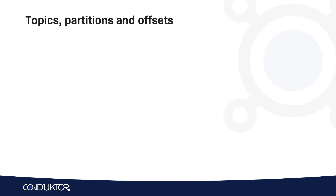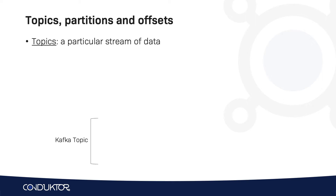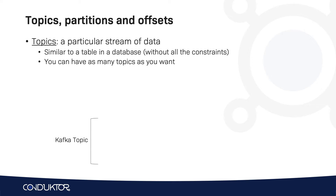Let's start by learning topics, partitions and offsets. In Kafka we have topics, and topics represent a particular stream of data. A Kafka topic is going to be pretty similar to what a table is in a database without all the constraints. If you have many tables in a database you will have many topics in Apache Kafka. You can have as many topics as you want, and the way to identify a topic is by its name, so it will need to have a unique name.